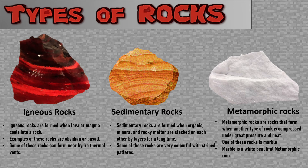Metamorphic rocks are rocks that form when another type of rock is compressed under great pressure and heat. One of these rocks is marble. Marble is a beautiful metamorphic rock and it's used for sculpting and doing stuff.